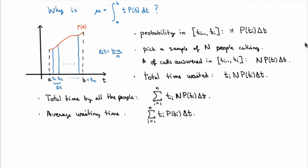Finally, we take the limit as the number of intervals goes to infinity, equivalent to sending the width of the rectangles to zero. That turns the sum into the limit of a Riemann sum, which becomes an integral. The average waiting time becomes the integral from A to B of t × p(t) dt — exactly the formula we had for the mean of the probability density function.